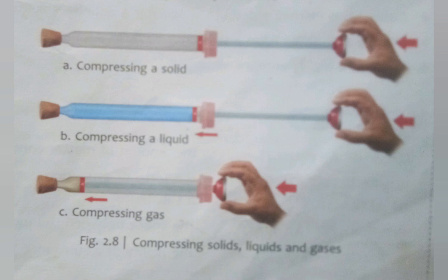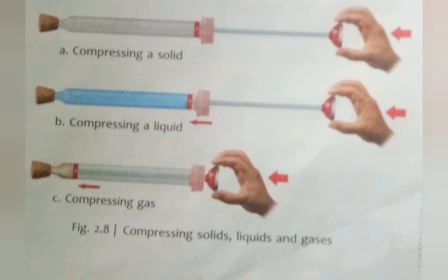Now, try to compress the contents by pushing the piston in each syringe. We observe that the piston can be easily pushed into the syringe that is empty because it contains air. The piston of the syringe that contains water moves only slightly when pressure is applied, and the piston of the syringe containing solid (sand) does not move at all. From these observations, it is clear that gases are highly compressible, liquids are only slightly compressible, and solids are incompressible.